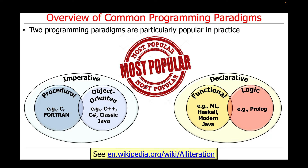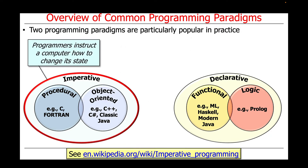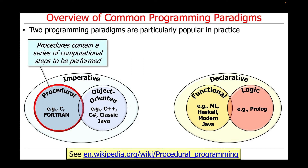Two programming paradigms are particularly popular in practice. The imperative paradigm allows programmers to instruct a computer how to change its state. Within the imperative paradigm, there are several categories of languages. One category are the so-called procedural languages, where procedures or subroutines contain a series of computational steps to be performed.